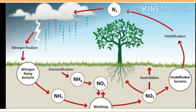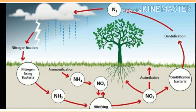Atmospheric fixation of nitrogen. Lightning occurs in the rainy season. This causes atmospheric nitrogen and oxygen to react with each other to form nitric oxide, which is again oxidized to form nitrogen dioxide. The nitrogen dioxide dissolves in rain water and is converted into nitric acid, HNO3, which gets added to the soil along with the rain water. This acid reacts with different minerals in the soil and converts into salts. Plants use these nitrogen salts for their growth.